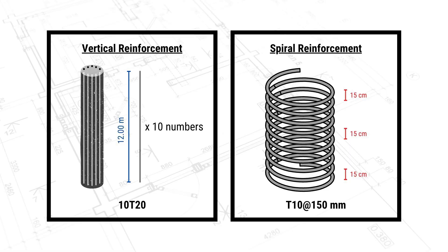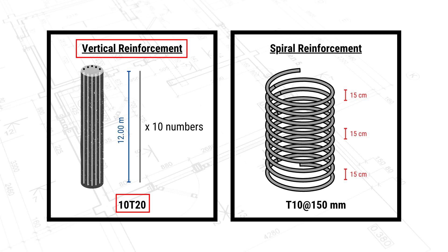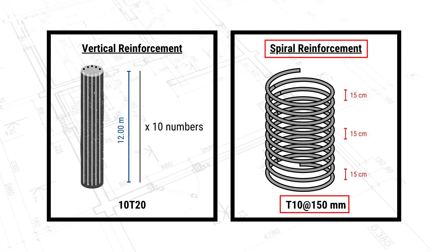Now talking about the steel reinforcement. As we can see we have two types of reinforcement in the pile: the vertical reinforcement and the spiral reinforcement. The vertical reinforcement is 10T20, which means 10 bars of 20 mm diameter, and the depth equals the pile depth of 12 meters. For the spiral reinforcement we have T10 at 150 mm spacing.